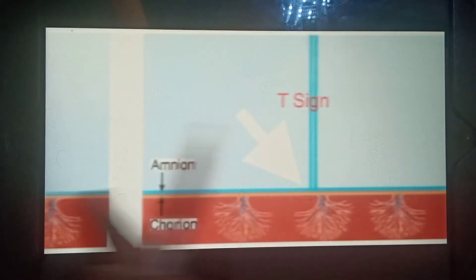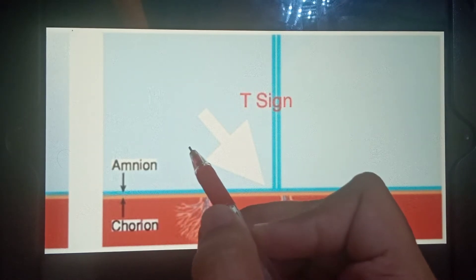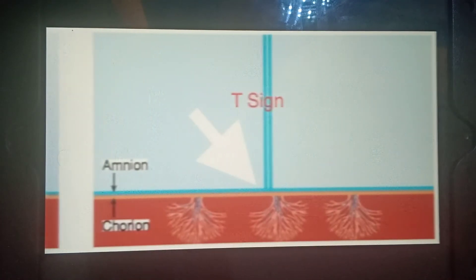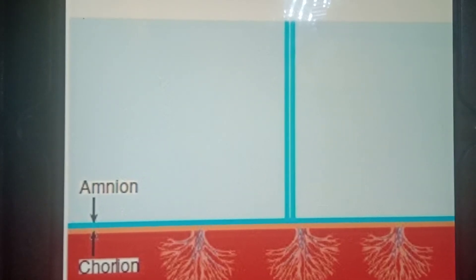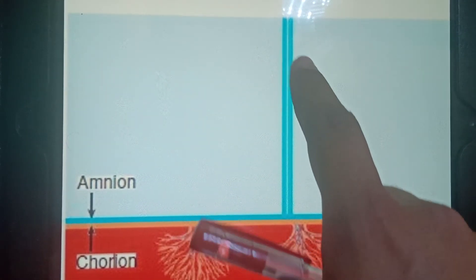In the next picture, we can see there is only one chorionic layer and two amniotic layers which are present. It presents as a T shape. This is the T sign, seen in monochorionic and diamniotic twins. This is the photograph of T sign.